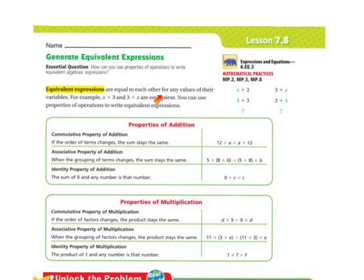Equivalent expressions are equal to each other for any values of their variables. For example, x plus 3 and 3 plus x are equivalent — they're the same. You can use the properties of operation to write equivalent expressions.